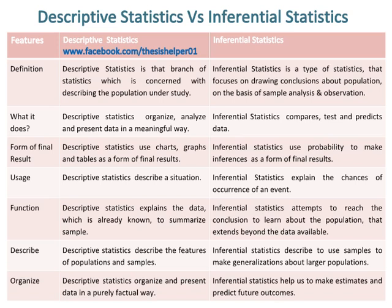Descriptive statistics describe the features of populations and samples, while inferential statistics use samples to make generalizations about larger populations. Descriptive statistics organize and present data in a purely factual way, while inferential statistics help us to make estimates and predict future outcomes.